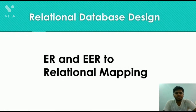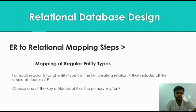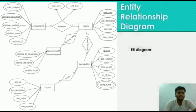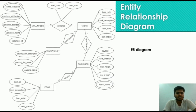Now we will see relational database design — ER and EER to relational mapping. The first step is: for each regular entity type in the ER diagram, create a relation that includes all the simple attributes of that entity. Of those attributes, select one as the key attribute, which uniquely identifies each entity. In our ER diagram, volunteer, task, packing list, packages, and items are the strong entities, and volunteer ID, task code, ID number, and item ID are their respective key attributes.